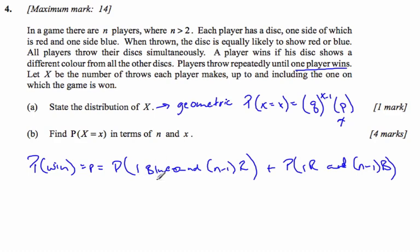When I have 1 blue and all the rest red, then I have a winner. I know the probability of getting a blue when I have n people playing is 1 half. He's the winner. The other people also have a probability of 1 half of getting red, and there's going to be n minus 1 of those.